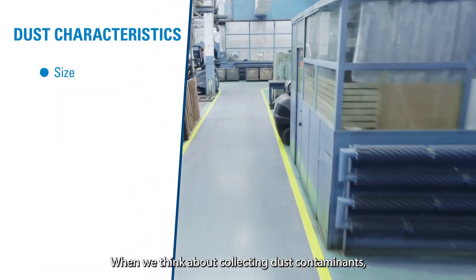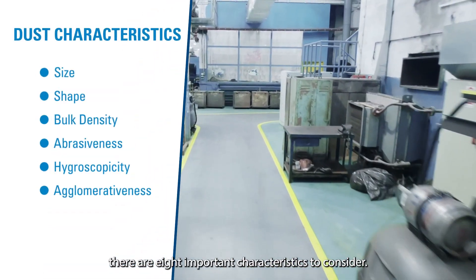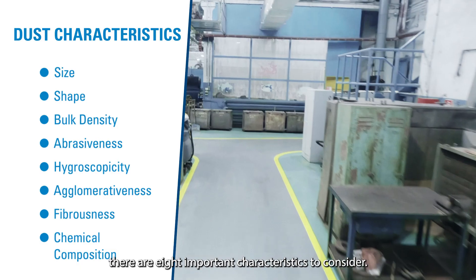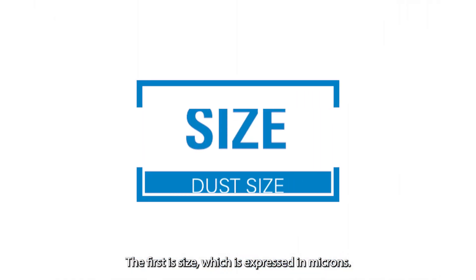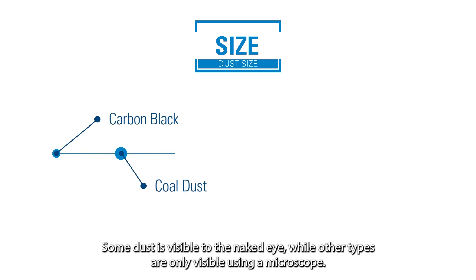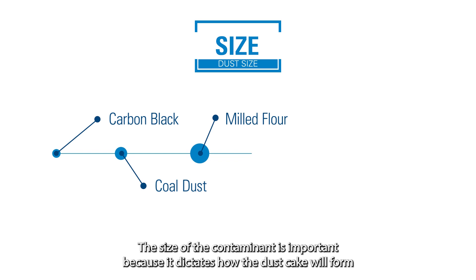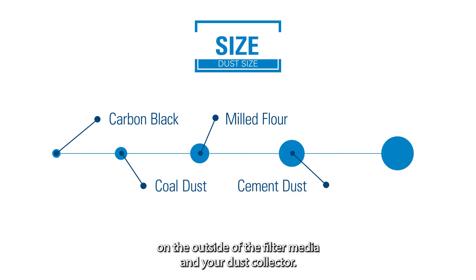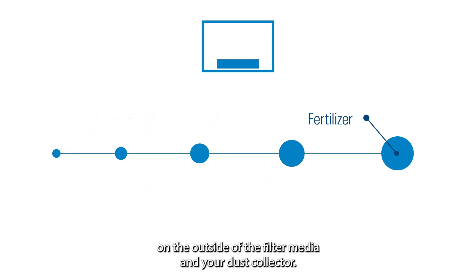When we think about collecting dust contaminants there are eight important characteristics to consider. The first is size, which is expressed in microns. Some dust is visible to the naked eye while other types are only visible using a microscope. The size of the contaminant is important because it dictates how the dust cake will form on the outside of the filter media in your dust collector.